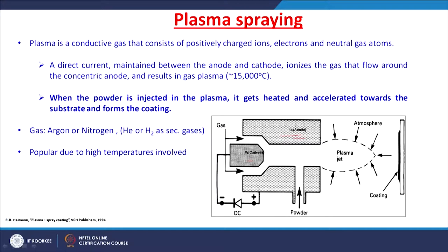The anode is generally copper and the cathode is tungsten. When the powder is injected into the plasma, it gets heated and accelerated towards the substrate and forms a coating. The gas used for generating plasma is argon or nitrogen — argon for low-energy plasma and nitrogen for high-energy plasma with higher temperatures. Even at larger plasma volumes, the temperature remains the same.